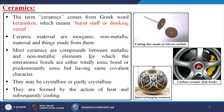The term ceramics comes from the Greek word 'keramikos' which means 'burnt stuff' or 'drinking vessel.' Ceramic materials are inorganic, non-metallic materials and things made from them. Most ceramics are compounds between metallic and non-metallic elements for which the interatomic bonds are either totally ionic or predominantly ionic but having some covalent character. They may be crystalline or partially crystalline, and are formed by the action of heat and subsequent cooling.